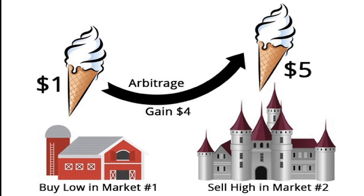Now, this gain would not be a long-term gain — it will only be a short-term gain. Because more and more people will start buying in market 1, demand in market 1 will increase, and since demand increases, the price will increase. Whereas in market 2, the supply would be more, and as a result the prices will fall. So an equilibrium price would come in both markets, making it only a short-term gain, not a long-term gain.